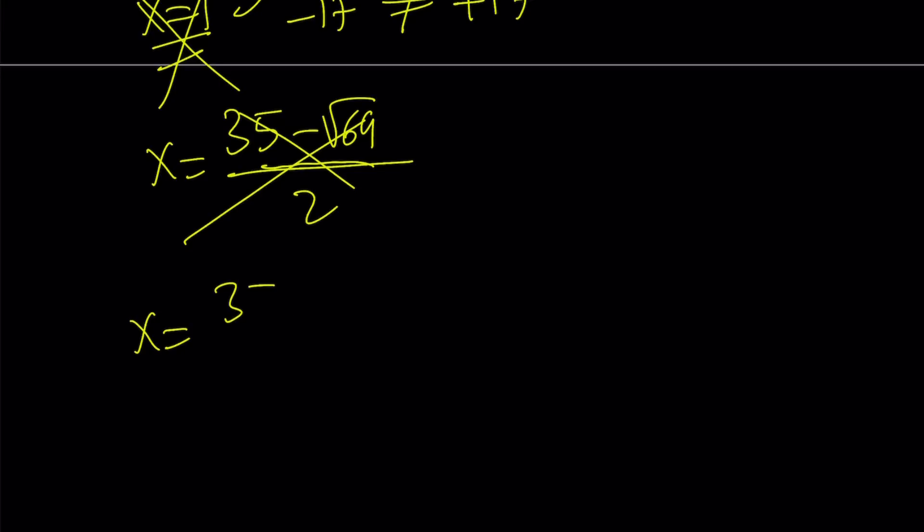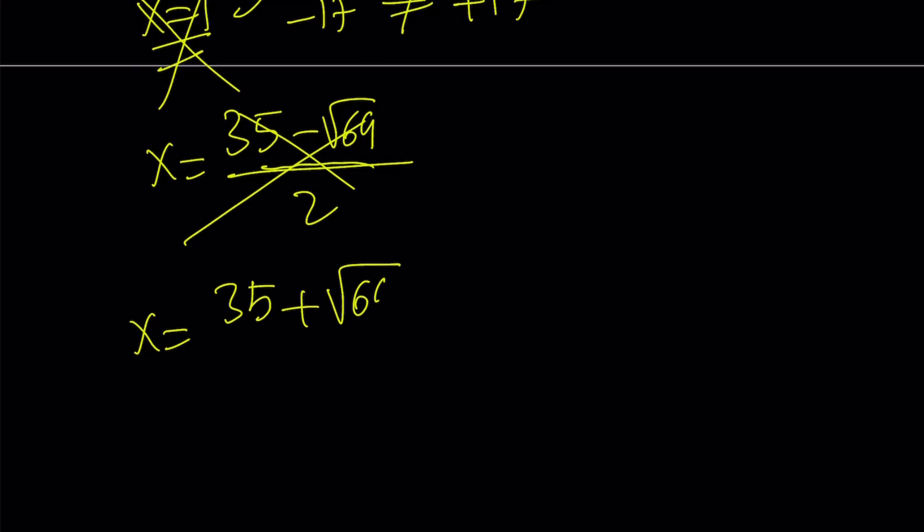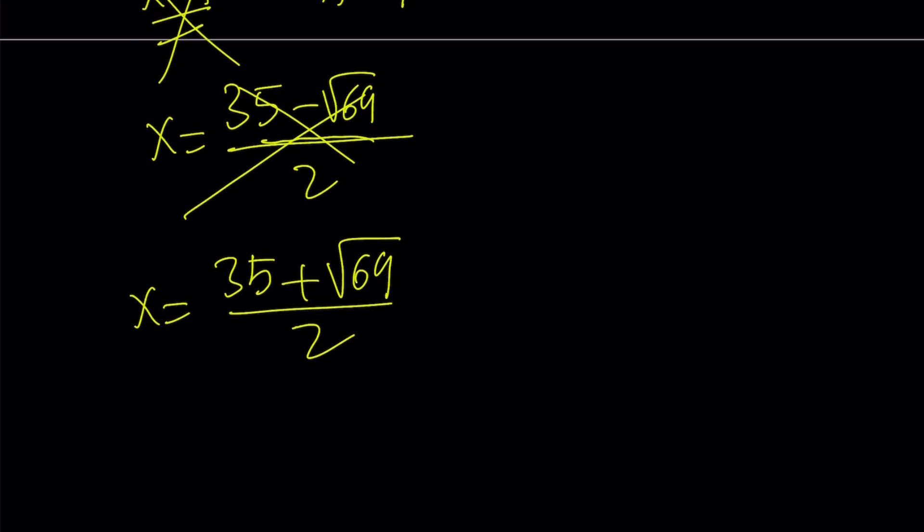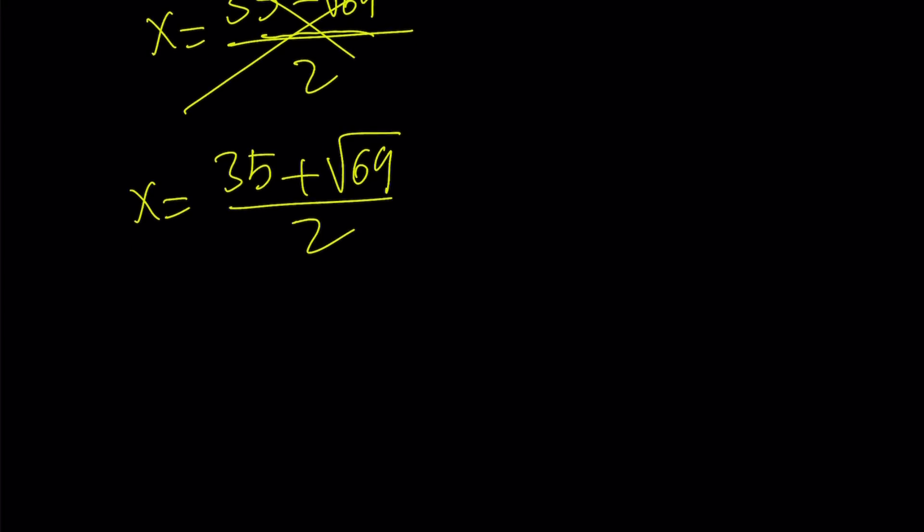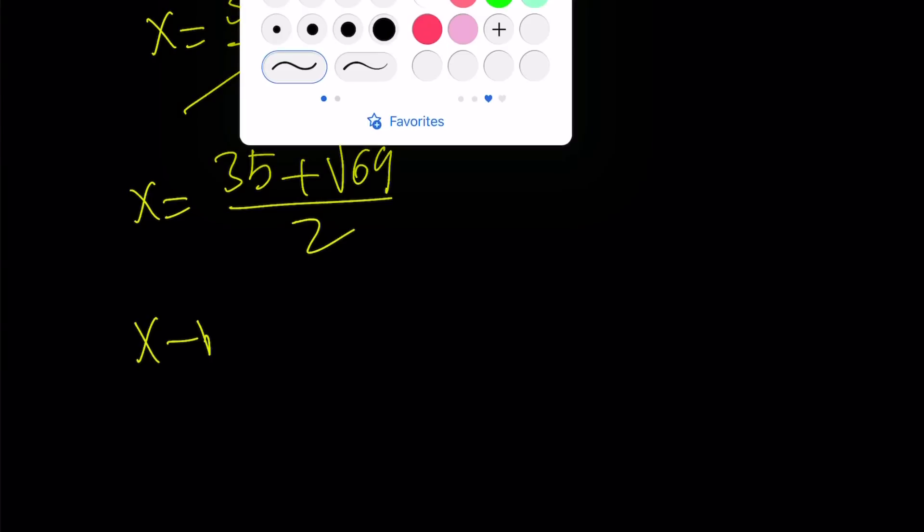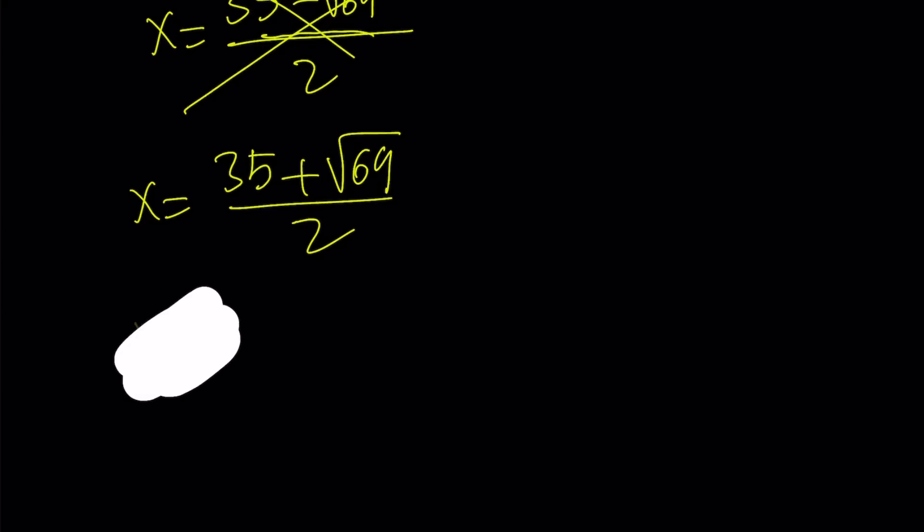What happens if x is equal to 35 plus the square root of 69 over 2? Let's go ahead and plug it in, and it's kind of a fun exercise. So when we plug in x equals this number, it works. So let me also save you that trouble as well. But what happens if you plug it in here?